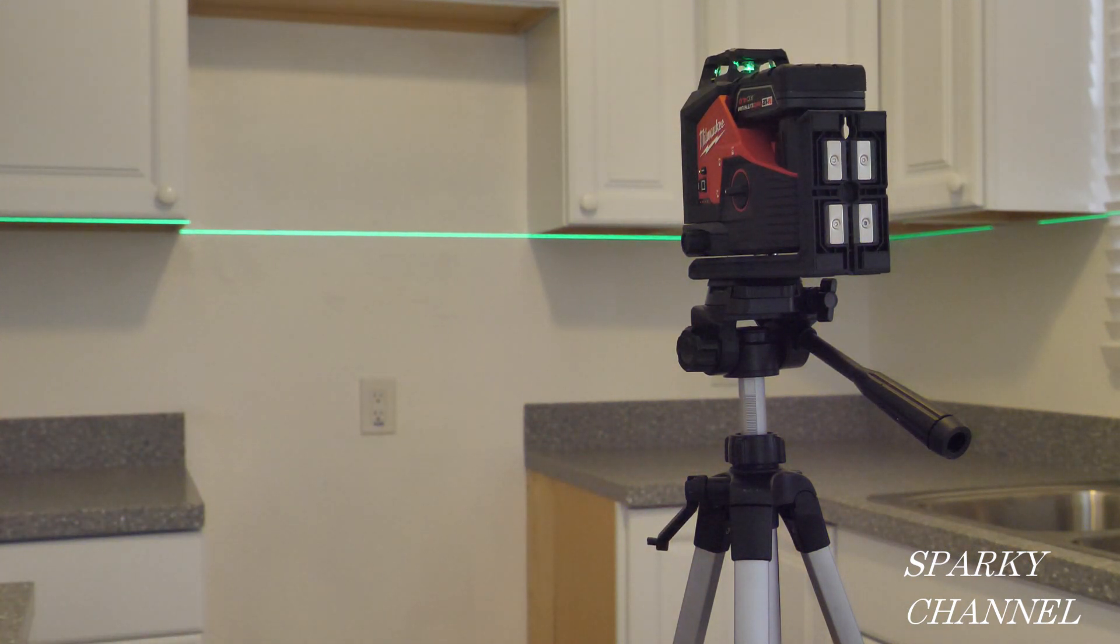The green line on the cabinet on the left is showing that the cabinet on the left is actually a little bit lower than the cabinet on the right.